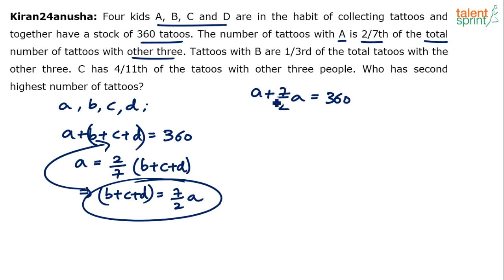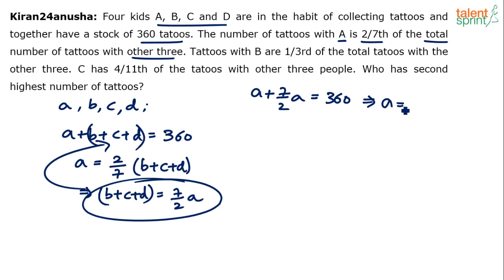In my view, you can do it mentally. A plus seven-by-two is nine-by-two A. Nine goes 40 times in 360. So A will be equal to 40 into two — the two in the denominator gets multiplied — which is 80. So A is equal to 80. Mental calculation without putting that on paper.